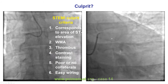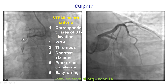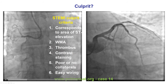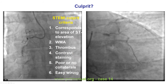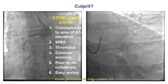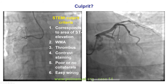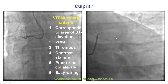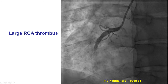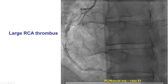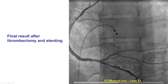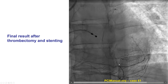Sometimes differentiating between thrombus and chronic complete occlusion can be challenging. Several criteria can be used: correspondence to areas of ST elevation, wall-motion abnormalities, filling defects suggestive of thrombus, and contrast retention within the thrombus. In the case shown earlier, a large filling defect representing thrombus was successfully aspirated, followed by stenting and restoration of TIMI 3 flow in the right coronary artery.